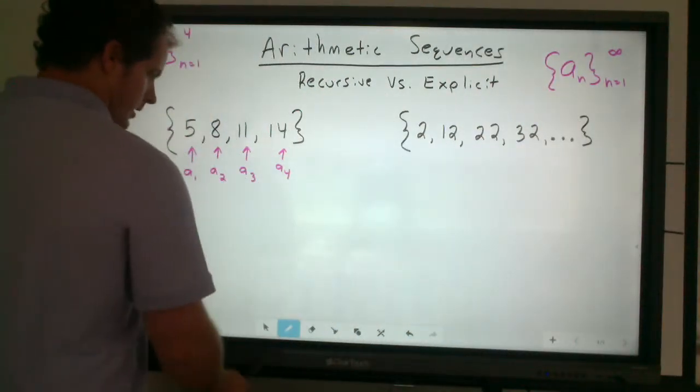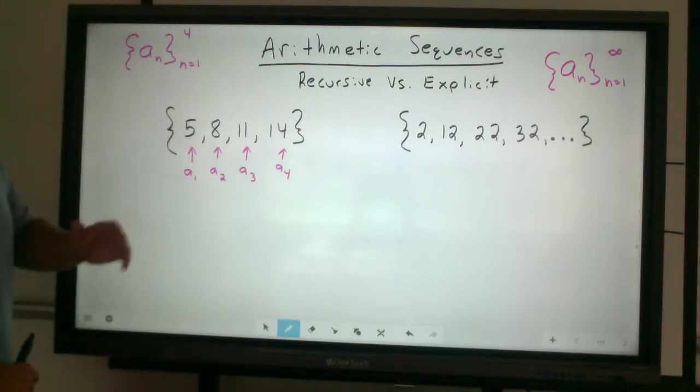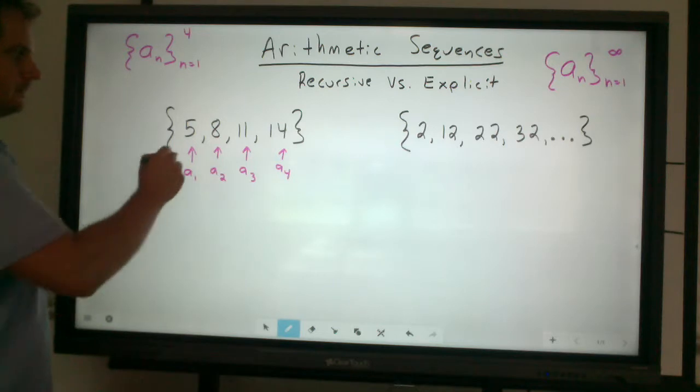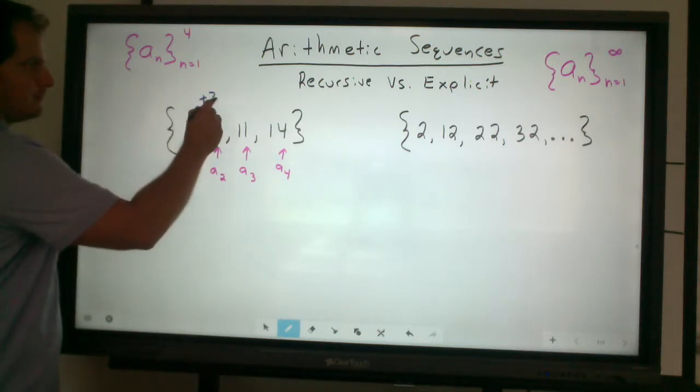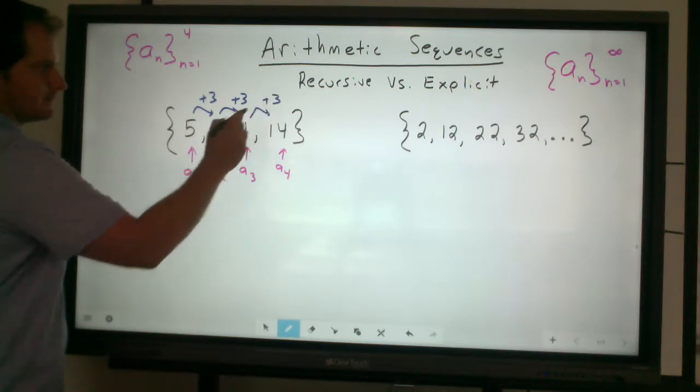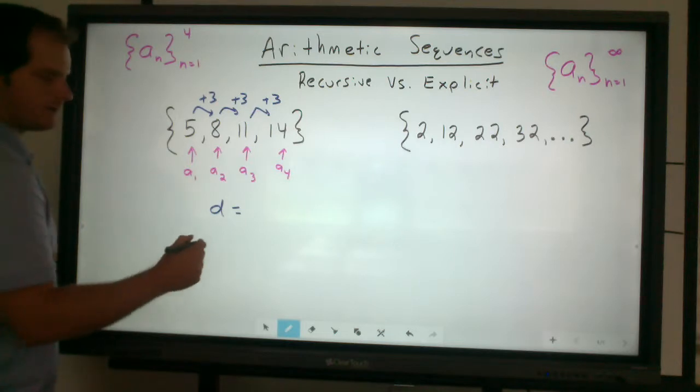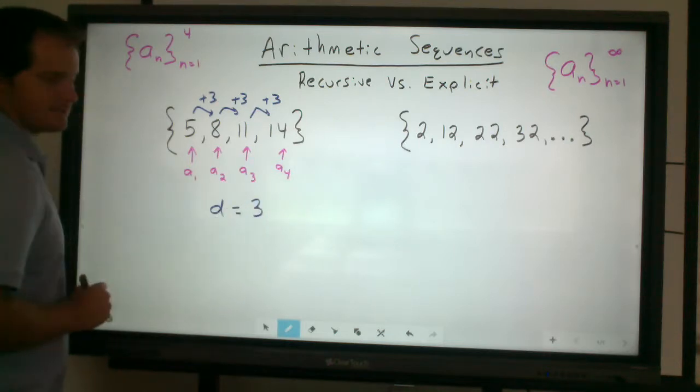Now, these are arithmetic sequences, and we should be able to find a common difference for both of them. For the first one, you'll notice that we do in fact add by 3. That is our common difference. On your paper, when you're doing this kind of work, you're going to want to write down what that is. What is that common difference? In this case, it's 3.